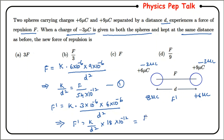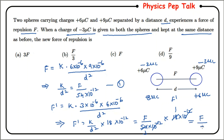Therefore F dash equals k divided by d squared times 18 times ten to the power of minus twelve. Substituting from the first equation — F divided by 54 equals k divided by d squared — the ten to the power of minus twelve terms cancel, and 18 divided by 54 gives one third. Therefore the answer is F divided by 3, and option B is the correct answer.